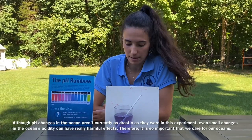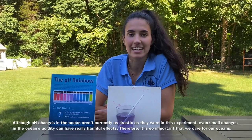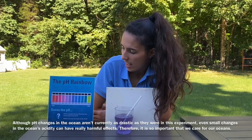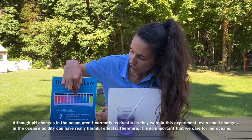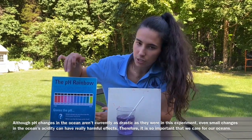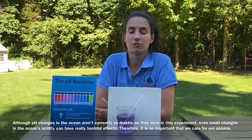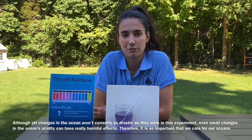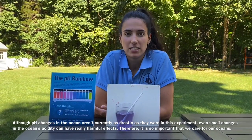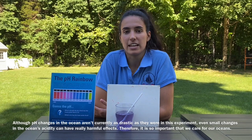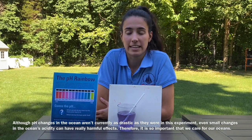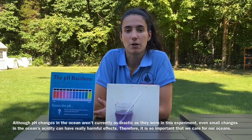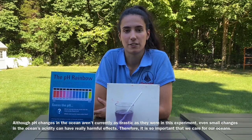Even though this water sample is tiny in comparison to the actual ocean, its pH change from 8 to 6 is really drastic in comparison to what currently occurs in the ocean. But even the smallest change in pH in the ocean can have really harming and irreversible effects on marine life, so it's so important that we protect our oceans.